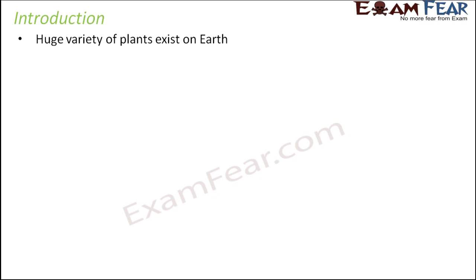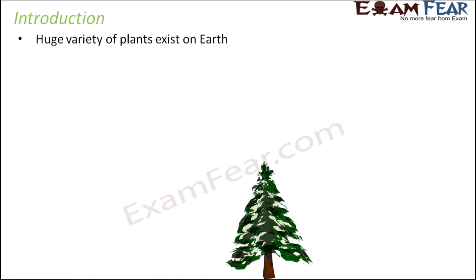We are going to talk about plants — different types of plants and different parts of the plant. There is a huge variety of plants which exist on this earth. If you look at your surroundings, you can see many different types: banyan trees, mango trees, apple trees, and smaller plants like rose plants, china rose, or hibiscus. All of them differ so much in size, shape, the type of flowers, and fragrance.